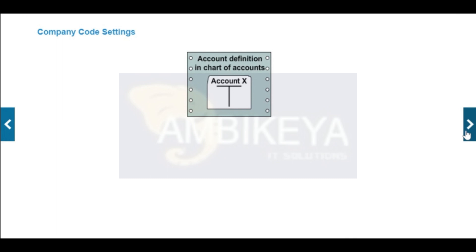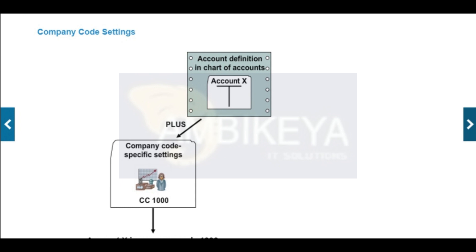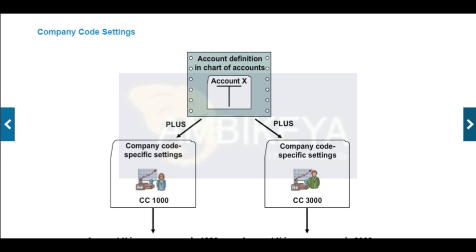Before you can use an account in a company code, you have to maintain the account definition at the chart of accounts level, then create company code-specific settings which are only valid in that company code. An example of a company code-specific setting is defining the account currency. Most accounts in company code 1000 use Euro currency, whereas company code 3000 uses US dollars for most of its accounts. When the account currency is the local currency of the company code, one can post to that account in any currency.